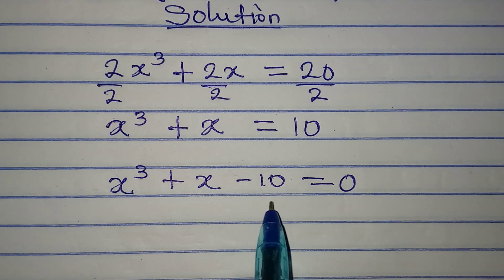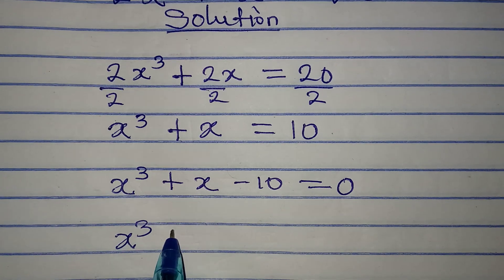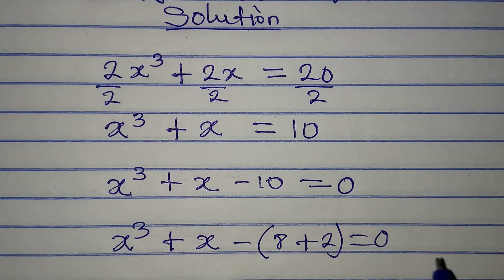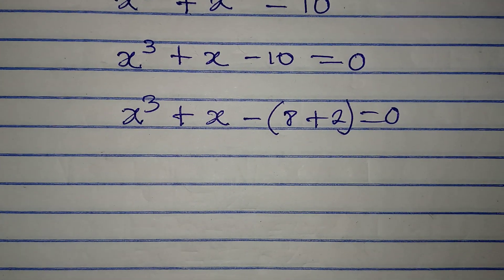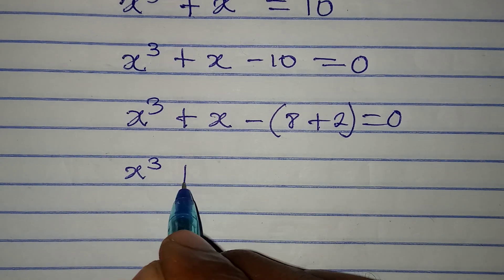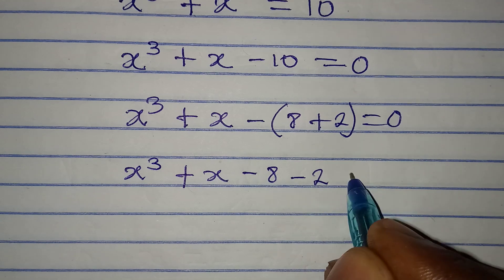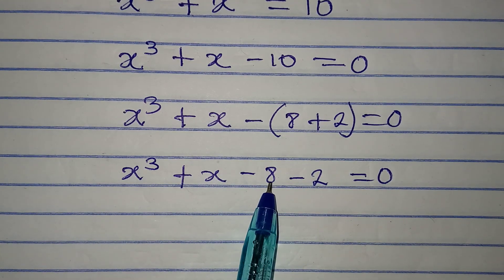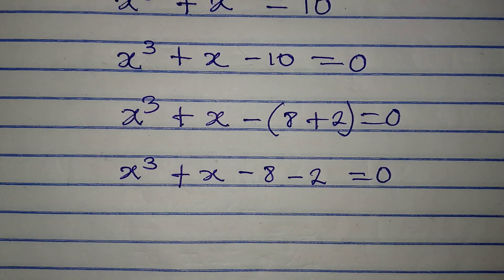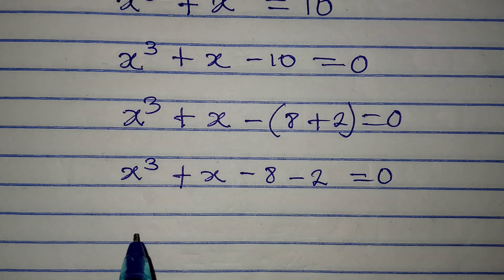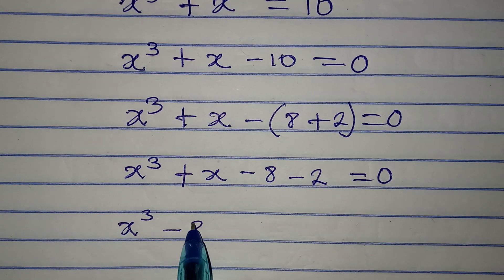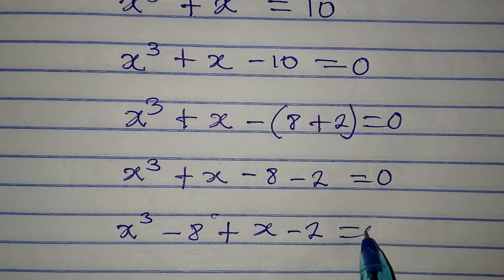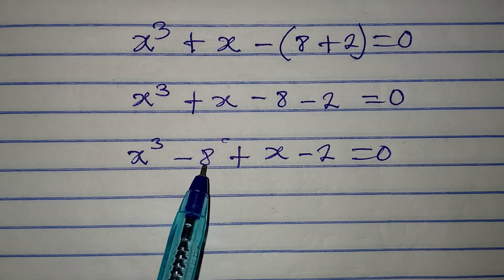What we are going to do is break this 10 into 2 parts. So we have x³ + x - (8 + 2) = 0. Opening the bracket, we get x³ + x - 8 - 2 = 0, because the negative sign opens the bracket, making 8 become negative 8. Now let us regroup this so that we have x³ - 8, and then plus x - 2 equals 0.